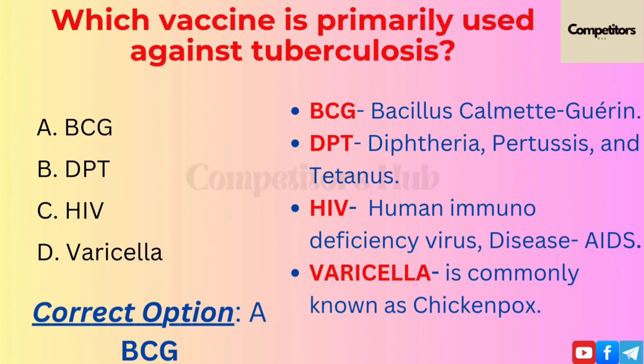BCG stands for Bacillus Calmette-Guérin. DPT is Diphtheria, Pertussis and Tetanus. HIV is Human Immunodeficiency Virus, and the disease is AIDS. Varicella is commonly known as Chickenpox.